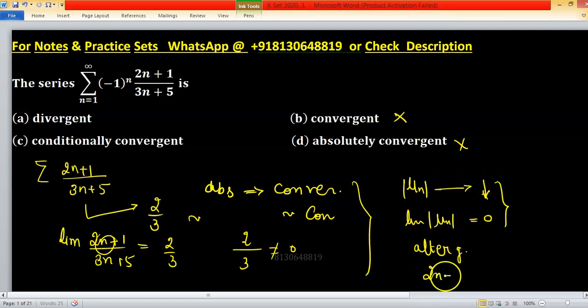So 2n plus 1 upon 3n plus 5, it's decreasing but limit is not going to 0.